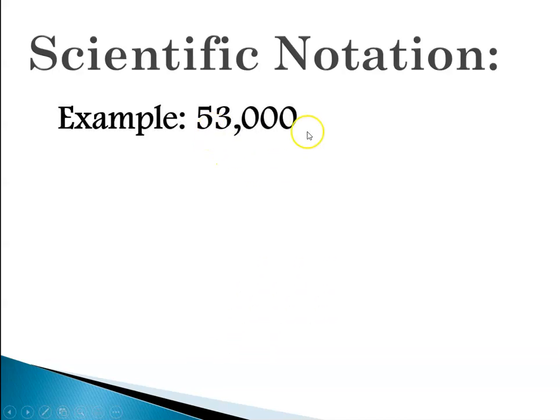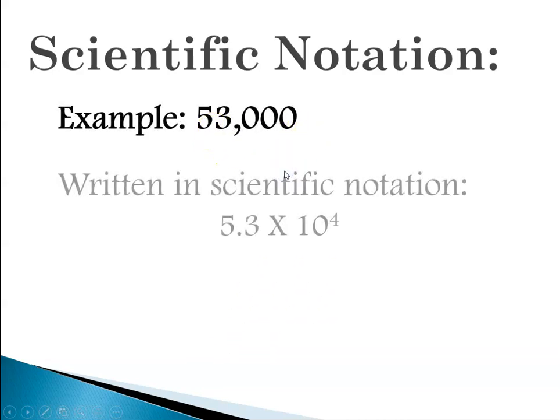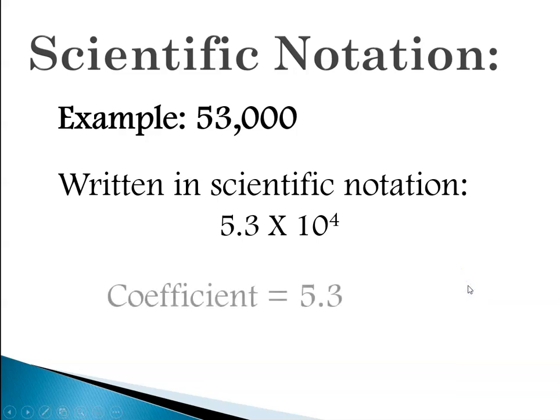One more example. 53,000 rewritten 5.3 times 10 to the 4. Two sig figs. Two sig figs. And if we wanted to analyze this we would say that the coefficient is 5.3 and the exponent is 4.